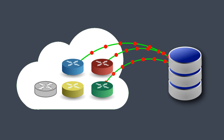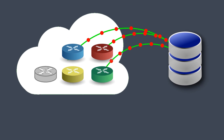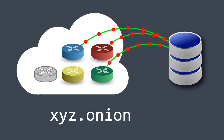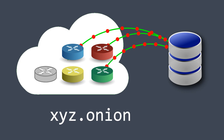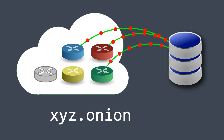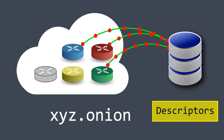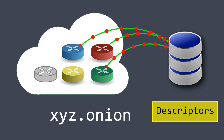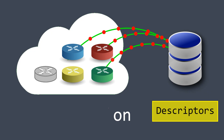The server advertises itself by generating a .onion link, which is created using the server's public key. This link can be shared or found anywhere, even on the normal web. The server also creates something called a descriptor, which contains information about the introduction points and cryptographic keys used for authentication. This descriptor is then added to the distributed hash table database of the Tor network.